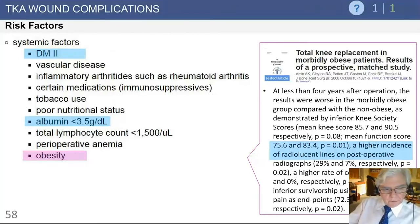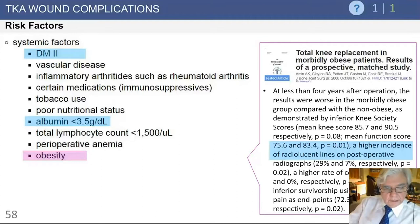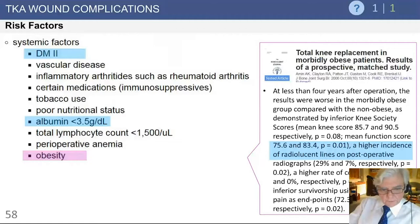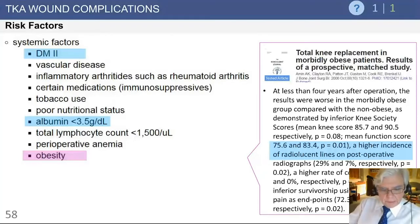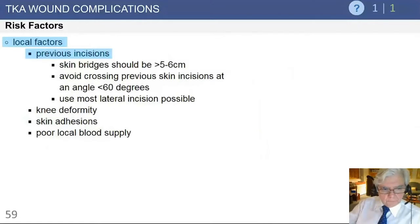There are many risk factors that can present with increased wound complications. To run through these: diabetes mellitus, vascular compromise in any fashion, inflammatory arthritis, immunosuppressive medications — particularly cortisone — can influence healing. Use of tobacco, poor nutritional status, albumin as a representative of nutritional status at less than 3.5, total lymphocyte count (increasingly used to assess nutritional status), perioperative anemia, and obesity are all potential causes of wound healing problems.